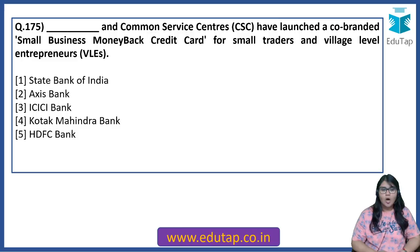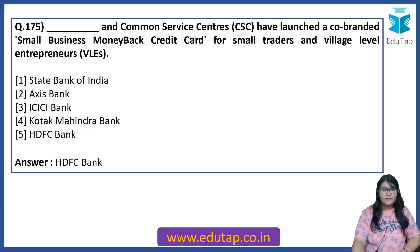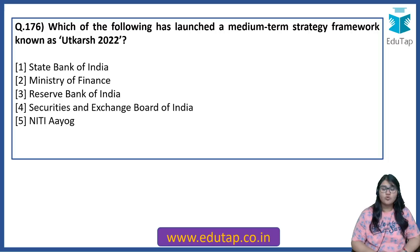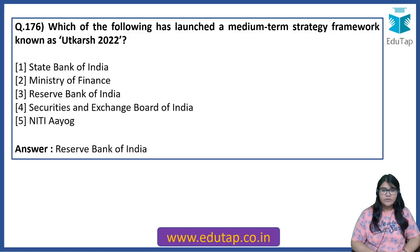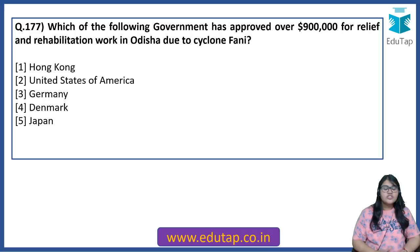Dash and Common Service Centers (CSC) have launched a co-branded small business money bank credit card for small traders and village level entrepreneurs. The answer is HDFC Bank. Which of the following has launched a medium-term strategy framework known as Utkarsh 2022? The answer is RBI — Reserve Bank of India has come out with this medium-term strategy framework called Utkarsh 2022.